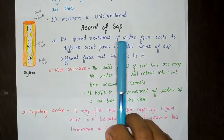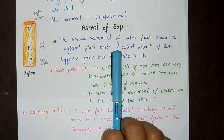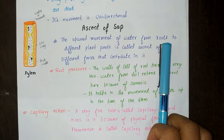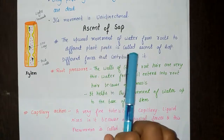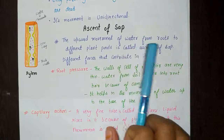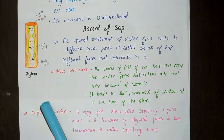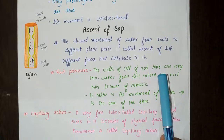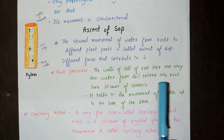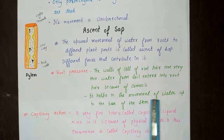The movement in xylem is unidirectional — meaning in one direction. The upward movement of water from roots to the different plant parts is called ascent of sap. Different forces contribute to this. The first is root pressure: the walls of the root cells are very thin, and water from the soil enters the root by osmosis. Root pressure helps in the movement of water up to the base of the stem.